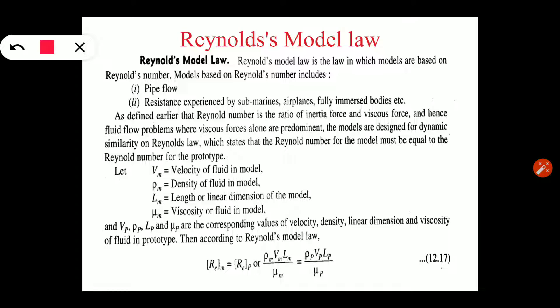First model law है Reynolds model law. Reynolds model law is the law in which models are based on Reynolds number. Models based on Reynolds number include pipe flow, resistance experienced by submarines, airplanes, fully immersed bodies, etc. — मतलब ऐसा system जिसके अंदर viscous force dominant हो, तो उस condition में जो model law use होगा वो Reynolds model law होगा। आपकी pipe flow, water flowing through any kind of pipe, और resistance experienced by submarines, airplanes, fully immersed bodies आदि।